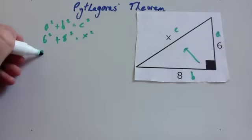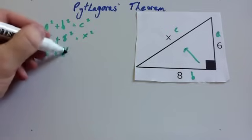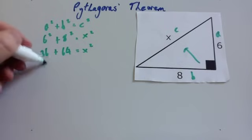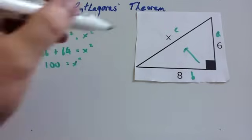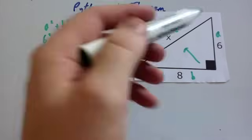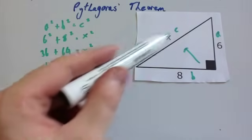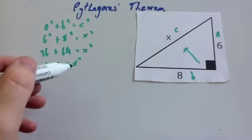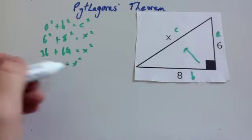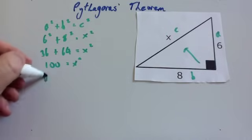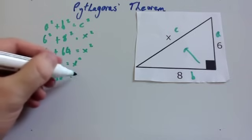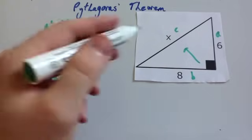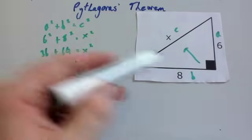Six times six is 36, and eight times eight is 64, and that adds together to give you x squared. Thirty-six plus 64 is 100, so x squared is 100. Some students at this point say the answer is 100, but 100 would be far too long for this side, so it doesn't quite make sense. We need to get rid of the squared, so we're going to square root both sides. The square root of 100 equals x, and the square root of 100 is 10, so x equals 10. So that would be 10 centimetres.